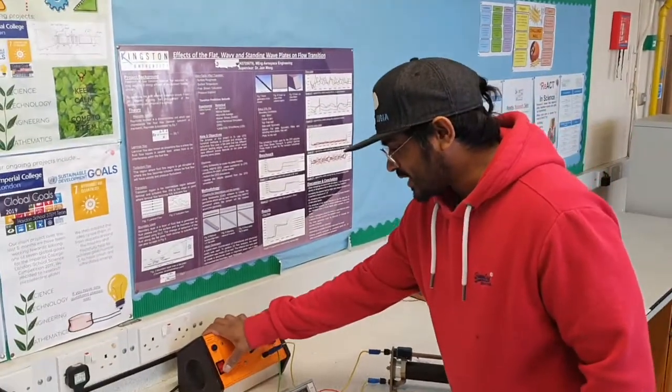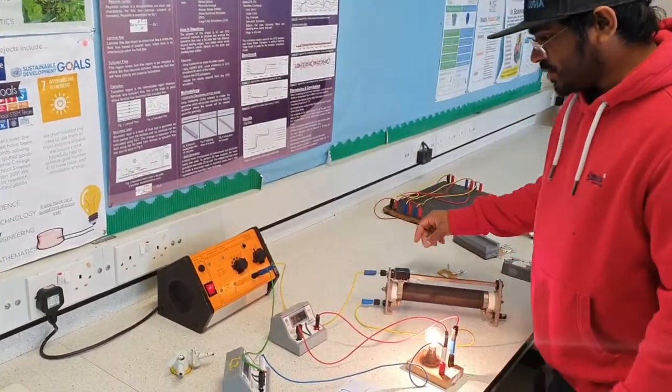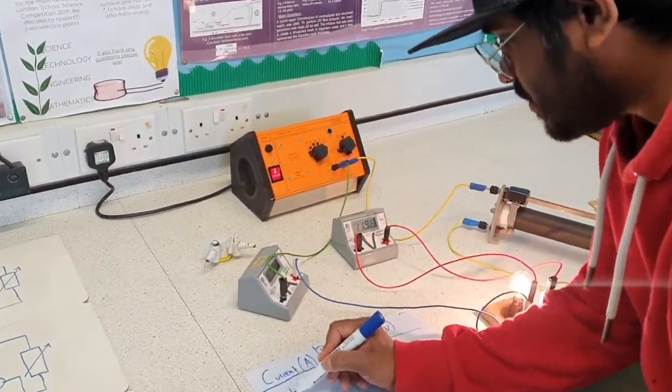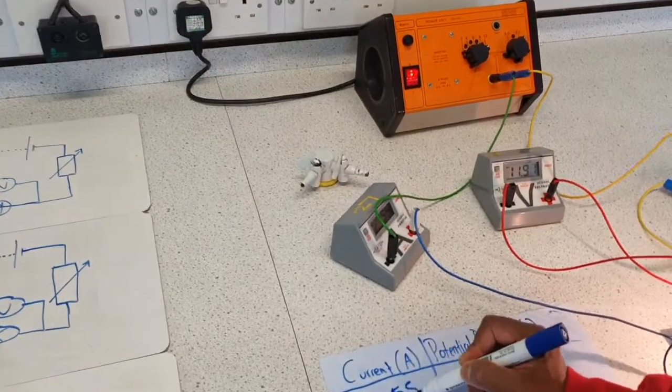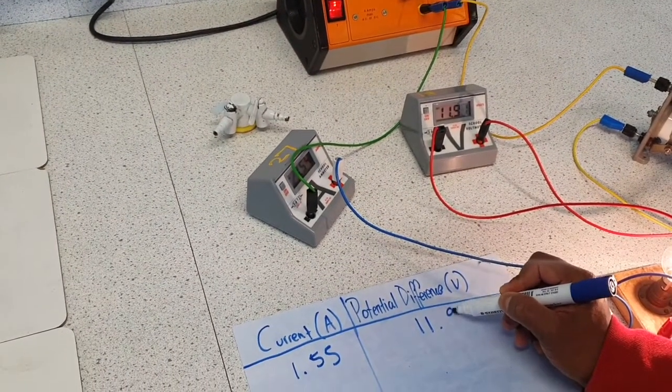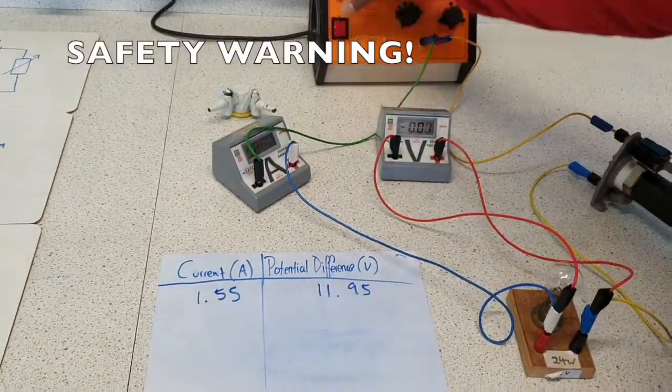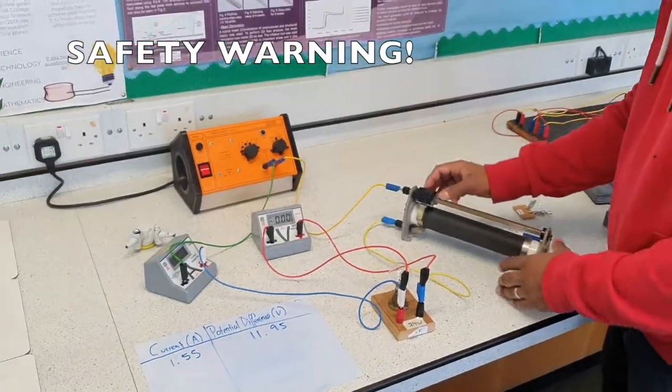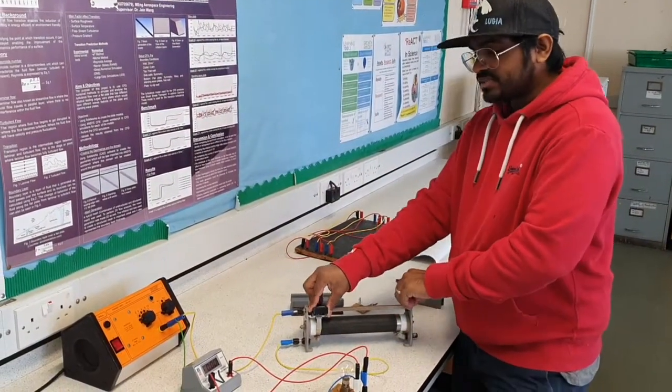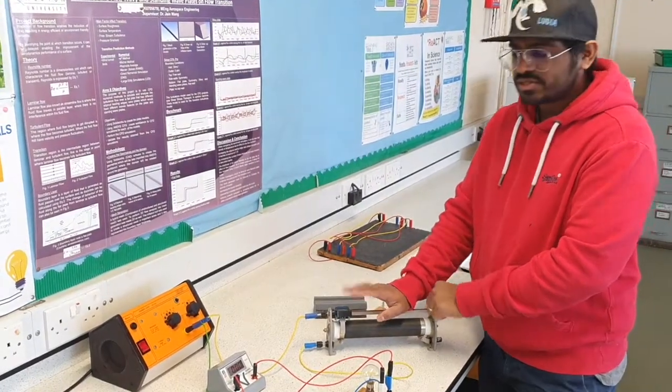Alright guys, so we're going to take some readings in this experiment. I'm going to switch on the bulb and take a reading from the current and potential difference. Over here, I've got 1.55 and over here, I've got 11.95. Once I've taken readings, make sure you switch it off so that the component doesn't overheat. Make sure you adjust the variable resistor as much as you can to get as many results so you can get a nice graph.